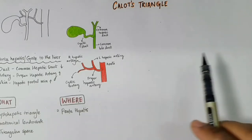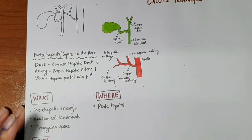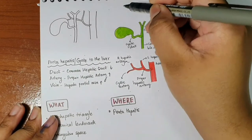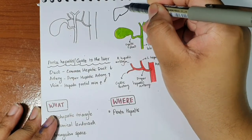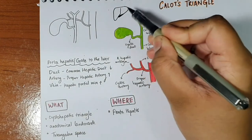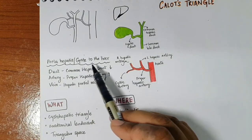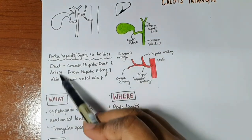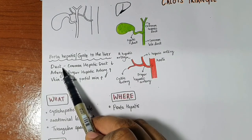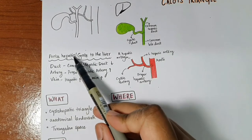Before we start learning about the triangle itself, I want you to know about the porta hepatis. The porta hepatis is also called the gate to the liver. On the inferior surface of the liver, we have the porta hepatis — it's the area where structures enter and leave the liver. We have one duct, one artery, and one vein, and these together comprise the porta hepatis.